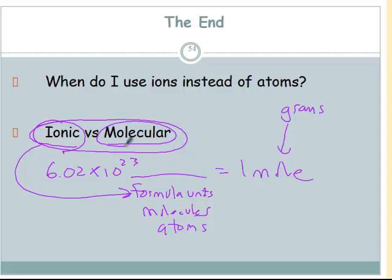If it's molecular, meaning covalent bonds, meaning nonmetals, it's going to be molecules. And if it is just an element, if it's just Al or just Mg, the example we did in class today, then it would be Avogadro's number of atoms would be equal to one mole.